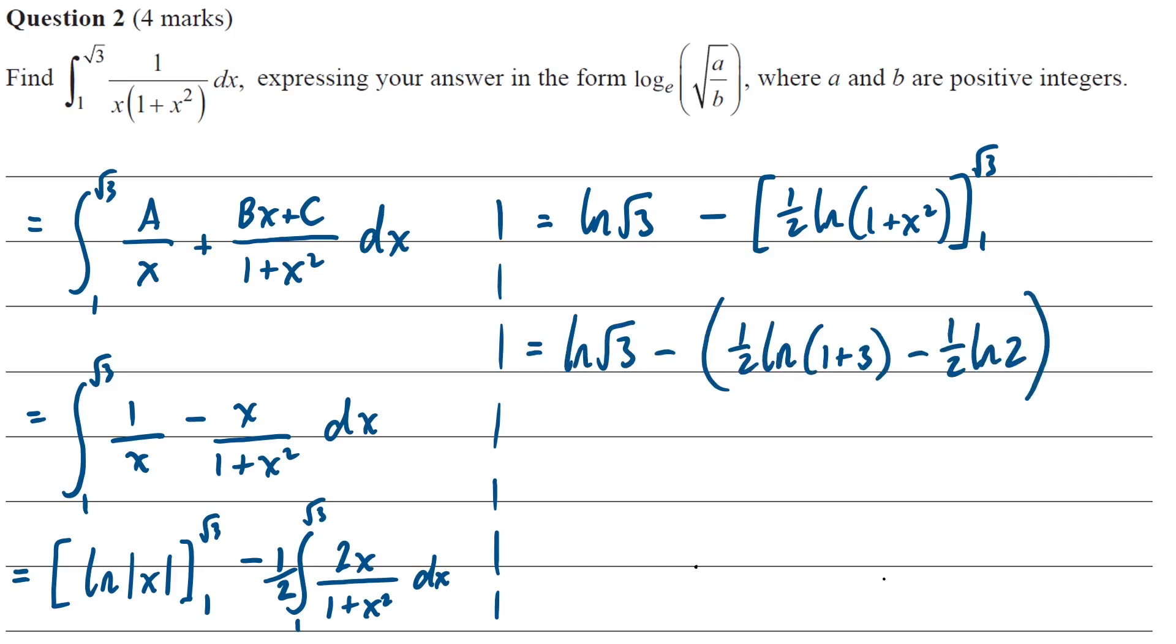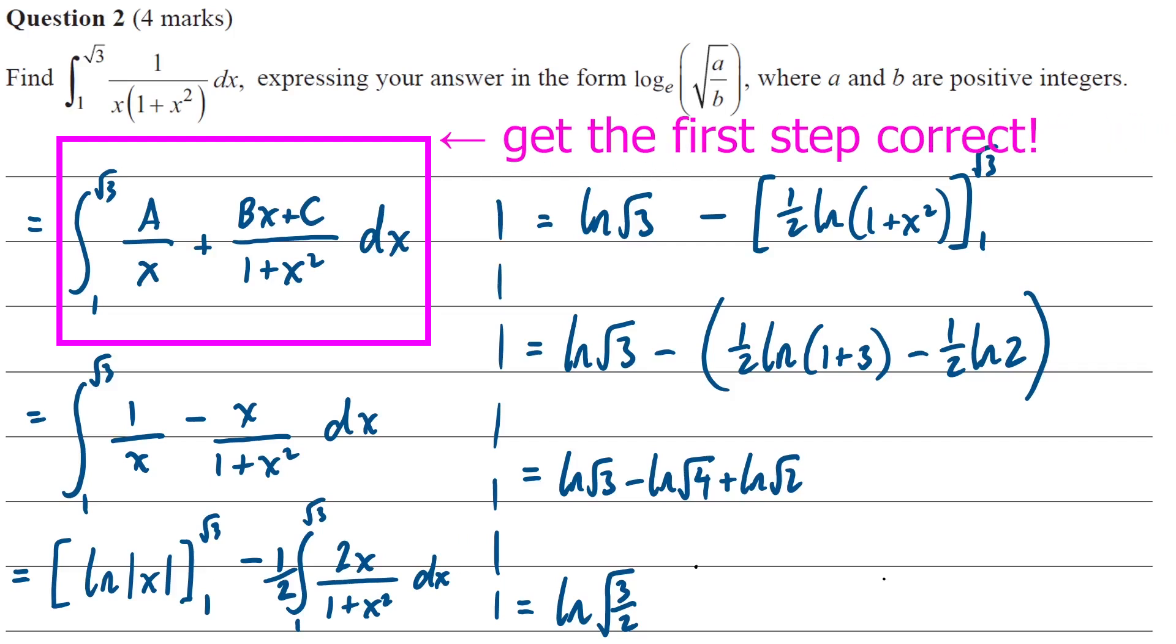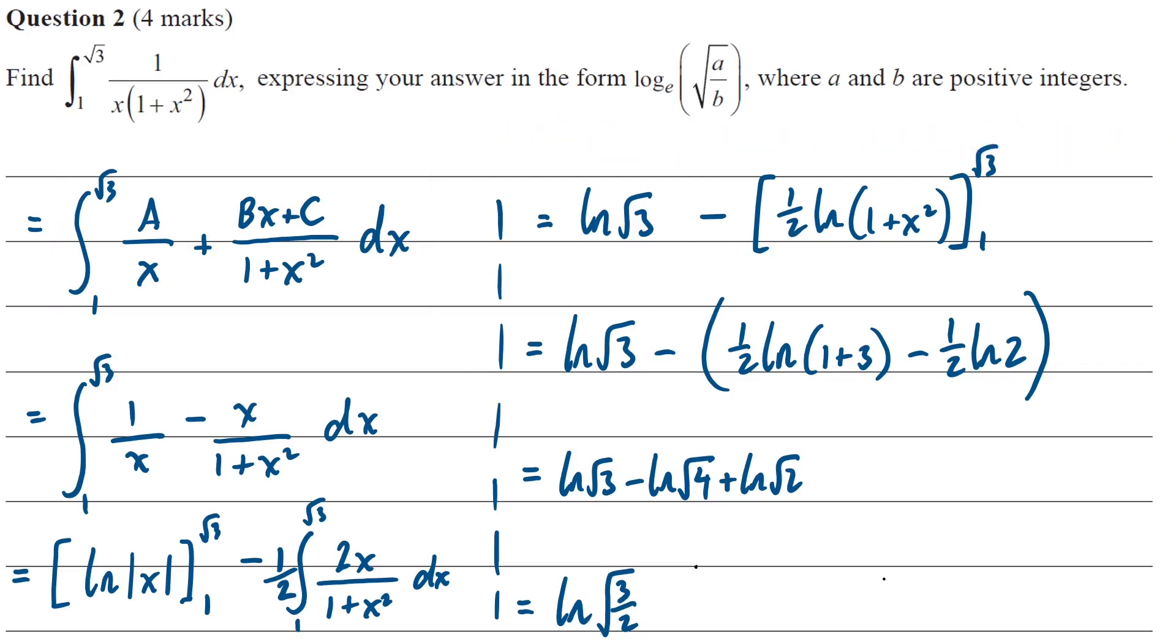And we need to write our answer in this form log of root a on b. So these coefficients of a half there, we can use the log laws to put them as a power and then write everything with square roots. So log of root 3 minus log of root 4 plus log of root 2. And if we use our log laws to simplify that, we'll get log of root 6 over 4, which simplifies down to 3 over 2. So it turns out fine, so long as we set up our partial fractions correctly. Again, it's really important to get that first step correct, and then the subsequent steps can follow on from that.